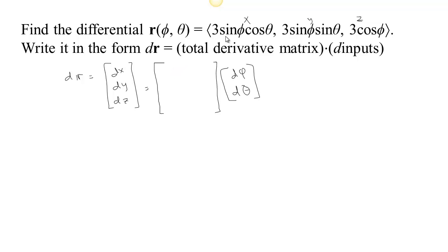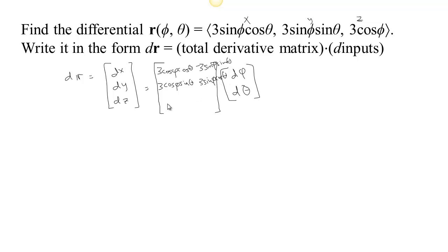The derivative of x with respect to phi: the derivative of sine phi is cosine phi, so we get three cosine phi cosine theta. The derivative of x with respect to theta: the derivative of cosine is negative sine, so we have negative three sine phi sine theta. The derivative of y with respect to phi would be three cos phi sine theta, and the derivative of y with respect to theta would be three sine phi cos theta. And finally, the derivative of z with respect to phi would be negative three sine phi. The derivative of z with respect to theta — z doesn't depend on theta, so that derivative is zero.